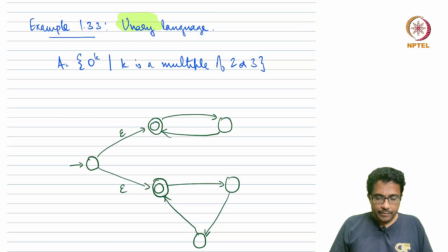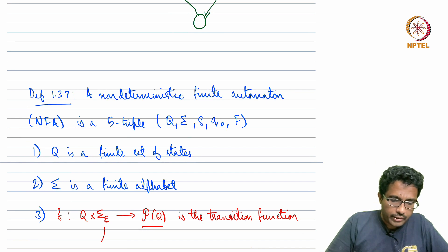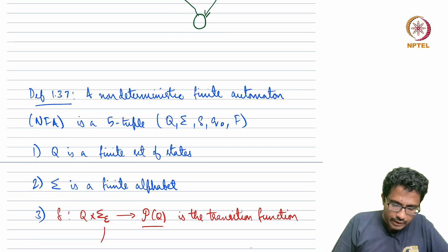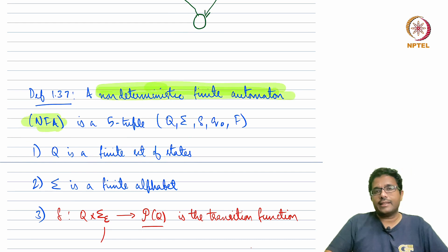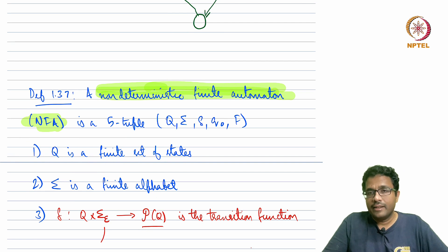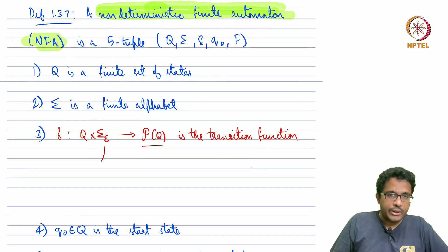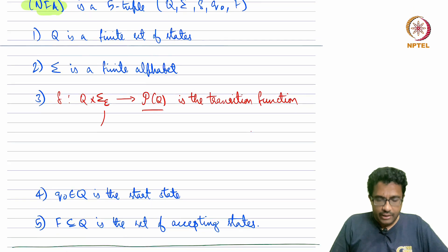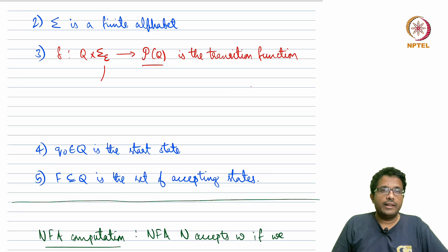Now let us come to the formal definition of NFAs. The definition is very similar to what we saw in DFAs. A non-deterministic finite automaton or NFA is a 5-tuple with exactly the same components: Q is a set of states, sigma is a finite alphabet, Q0 is a start state, and F is a set of accepting states — exactly the same as in DFAs.